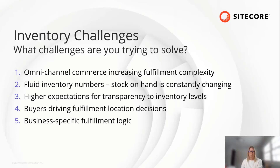Omnichannel means dispersed inventory. Next, whether buying online or in-store, buyers today are using digital commerce experiences to find where a product is available. They expect to see inventory counts for the products they want. Not only that, but sometimes they choose where the product gets fulfilled from — this is particularly the case for buy online, pickup in-store.